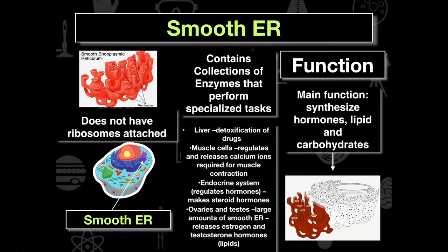Muscle cells need smooth ER because it regulates and releases calcium ions necessary for muscle contraction. The endocrine system needs it because it makes steroids necessary for homeostasis. The ovaries and testes have large amounts of smooth ER to release estrogen and testosterone hormones, which are lipids. So the smooth ER's main function is maintaining homeostasis via hormones and lipids, and detoxifying toxins within the blood system.